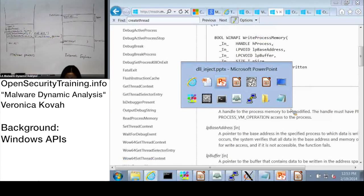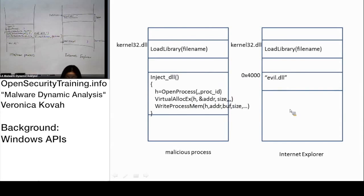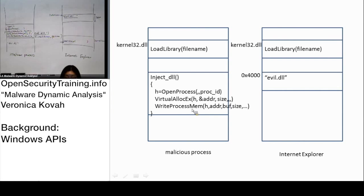Let's go back to the picture. We saw that write process memory gets the process handle and address hex 4000. The DLL probably already exists somewhere in the malicious process memory area. By calling write process memory, it is copying memory from the malicious process to Internet Explorer's memory space.